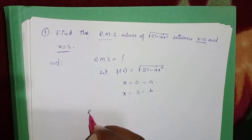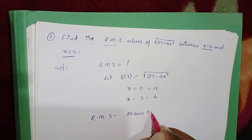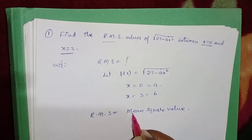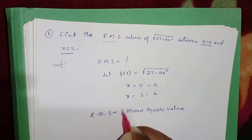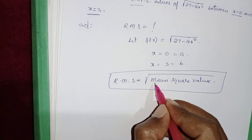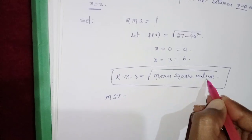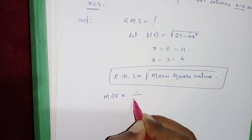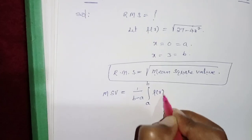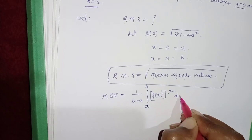If we want to find the RMS value, first of all we have to find the mean square value. Note that RMS is not equal to mean square value, but RMS is equal to the square root of the mean square value. The mean square value (MSV) formula is: MSV = (1 / (b - a)) × ∫[a to b] [f(x)]² dx.